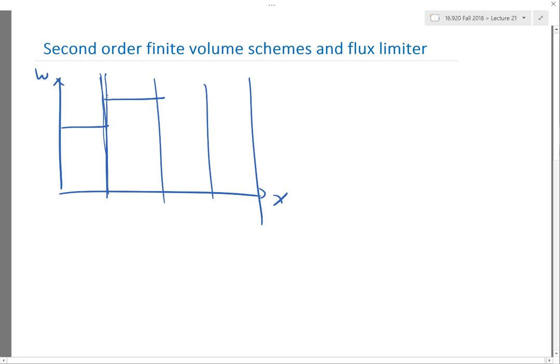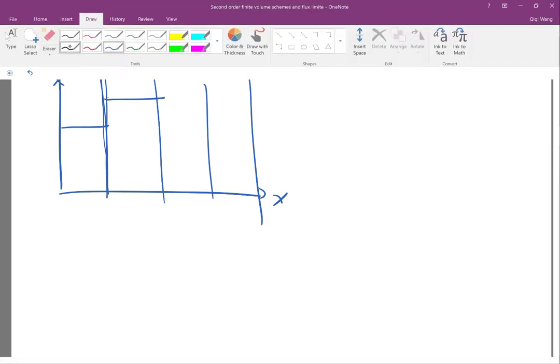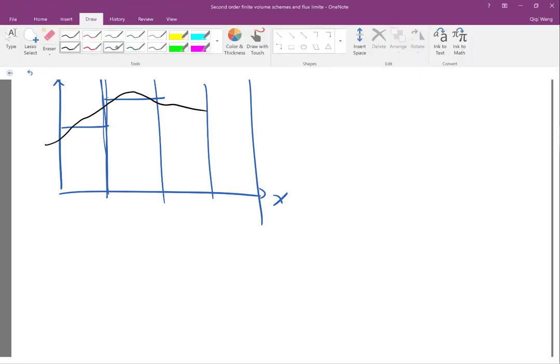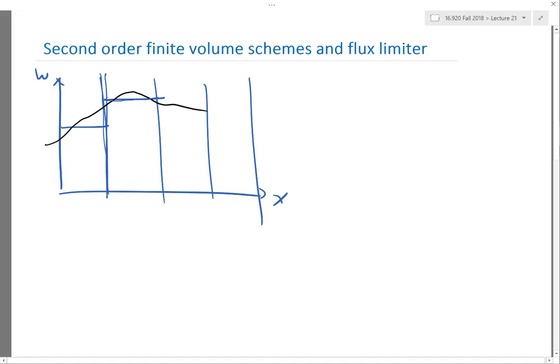So the error is really coming from, let's say, if the real function looks like that. I'm trying to make it having the same cell average as the two lines I'm drawing. The error you are incurring, which is the difference between the real left state and approximate left state, is actually proportional to the cell size.